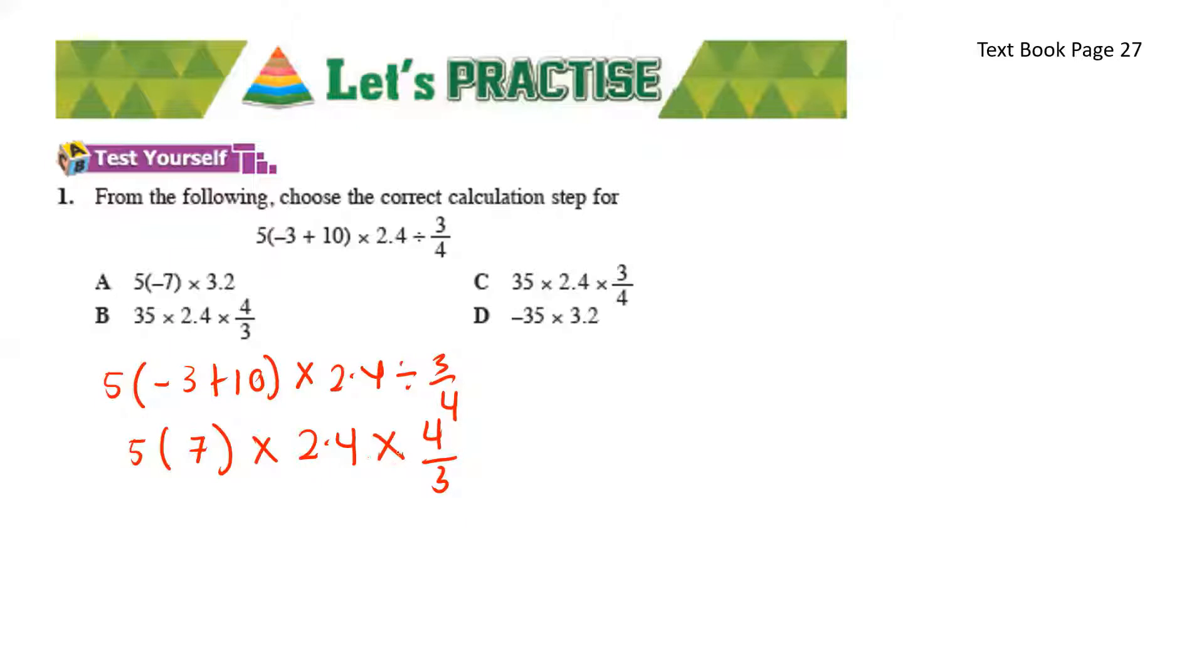The division is changed into multiplication when we swap the numbers over. So here we have 35 times 2.4 times 4 over 3. Let's check whether we have this answer in the options A, B, C or D. Here we have B.